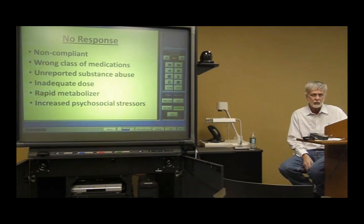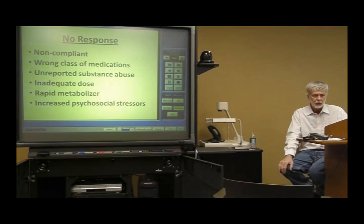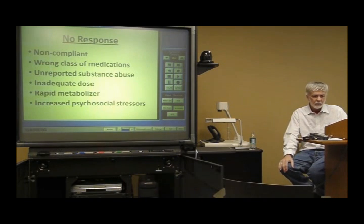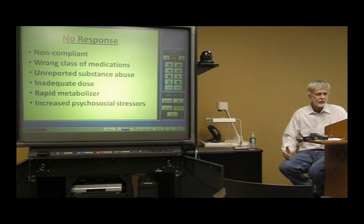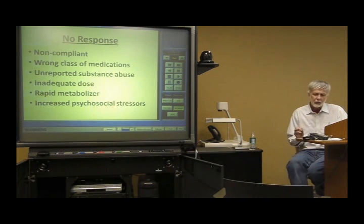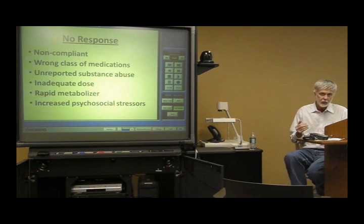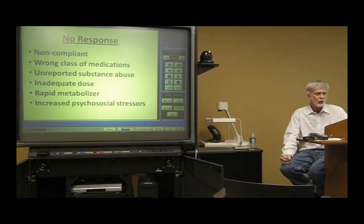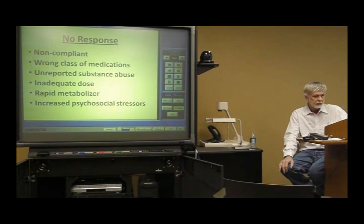The dose may be inadequate, in which case we need to progressively increase the dose, making sure we don't knock her over with side effects. She may be a rapid metabolizer, and it's hard to know that ahead of time. But if she has, let's say, 25% improvement, it may be that her liver is just metabolizing this so rapidly we get inadequate blood levels. So it's going to be important then to consider increasing the dose - you can go beyond the usual therapeutic guidelines and see if that works. And then of course, increased psychosocial stressors is oftentimes an issue.